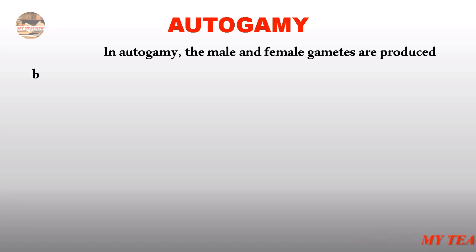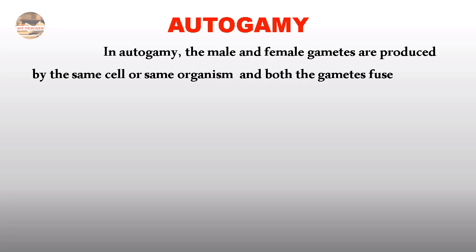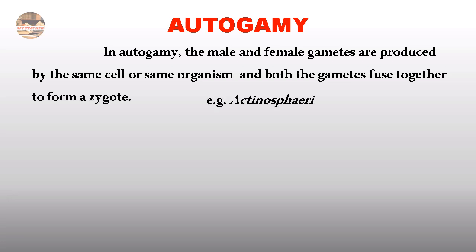In Autogamy, the male and female gametes are produced by the same cell or same organism, and both gametes fuse together to form a zygote. Examples are Actinospherium and Paramecium.